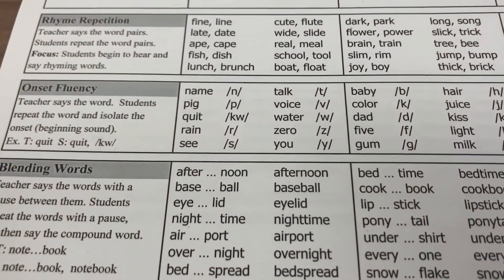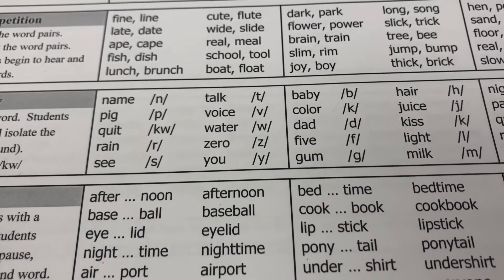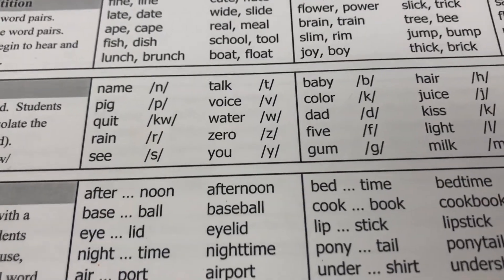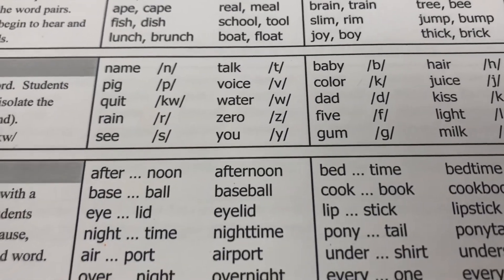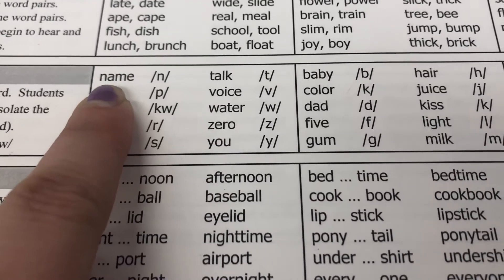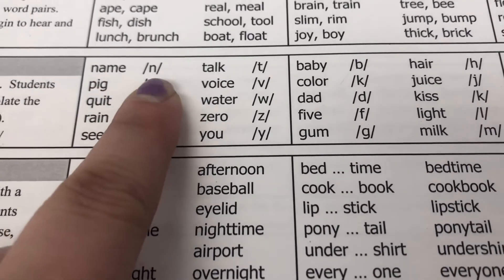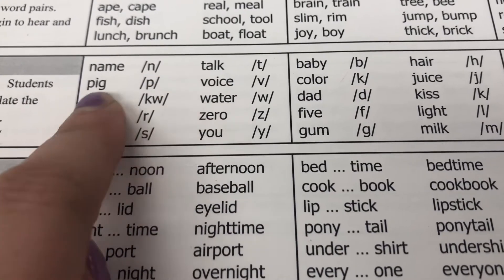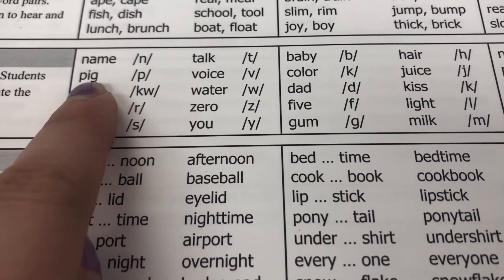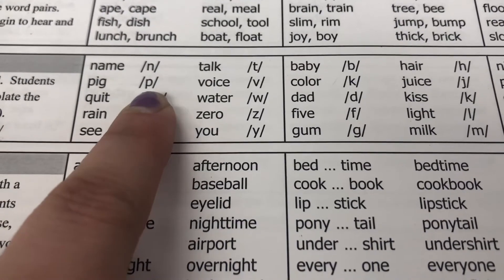Now we are moving on to onset fluency. I'm going to say the word and the students would repeat the word and isolate the onset, which is the beginning sound. Here's my word: name. Your child would say 'name' — N. Next word: pig. Pig — P.